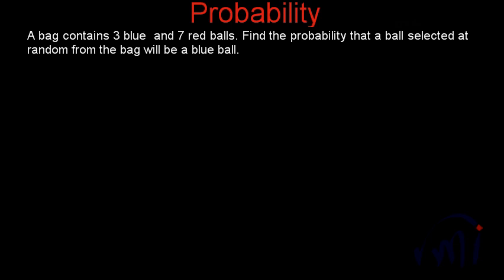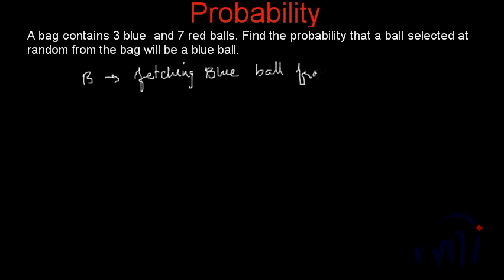In this video on probability, I am taking two problems based on balls in a bag. The first problem is easy and the second one is slightly tricky, not very difficult. The first problem statement says: a bag contains three blue and seven red balls. Find the probability that a ball selected at random from the bag will be a blue ball. Let capital B be the event of fetching a blue ball from the bag.